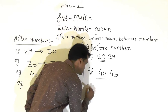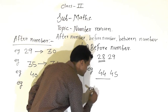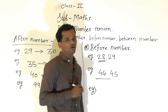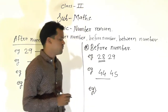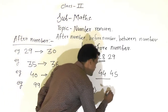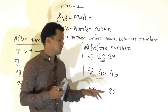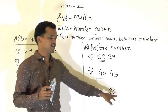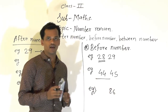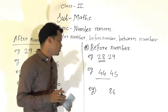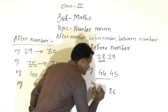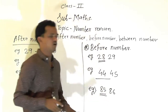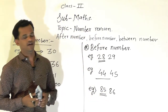One more example we will see here. The given number is 85. So 85 is the before number of 86.